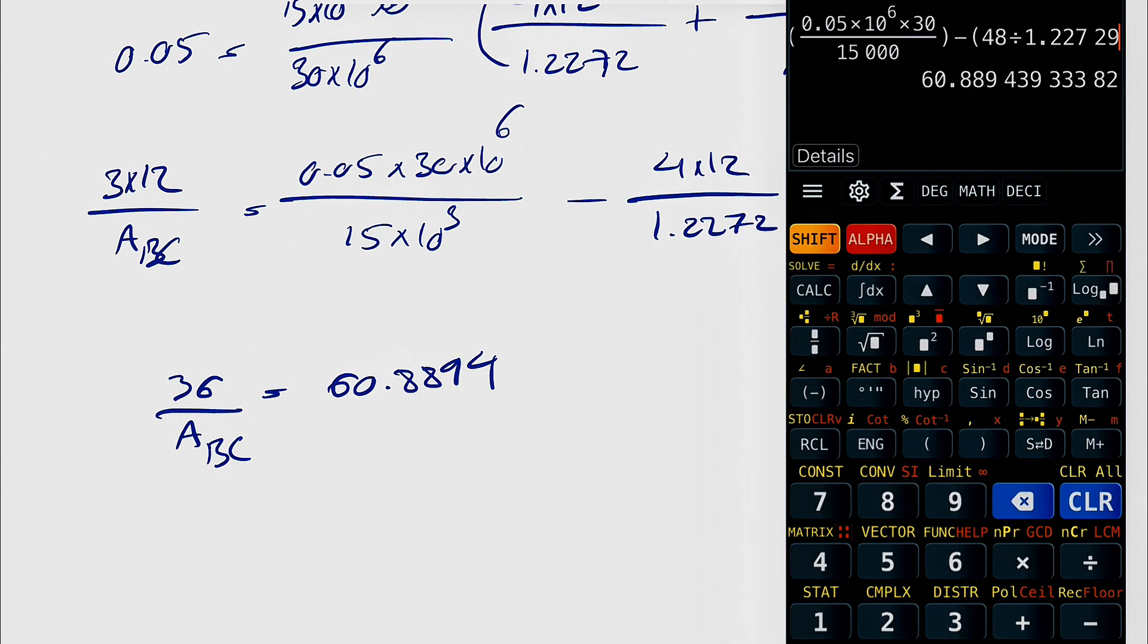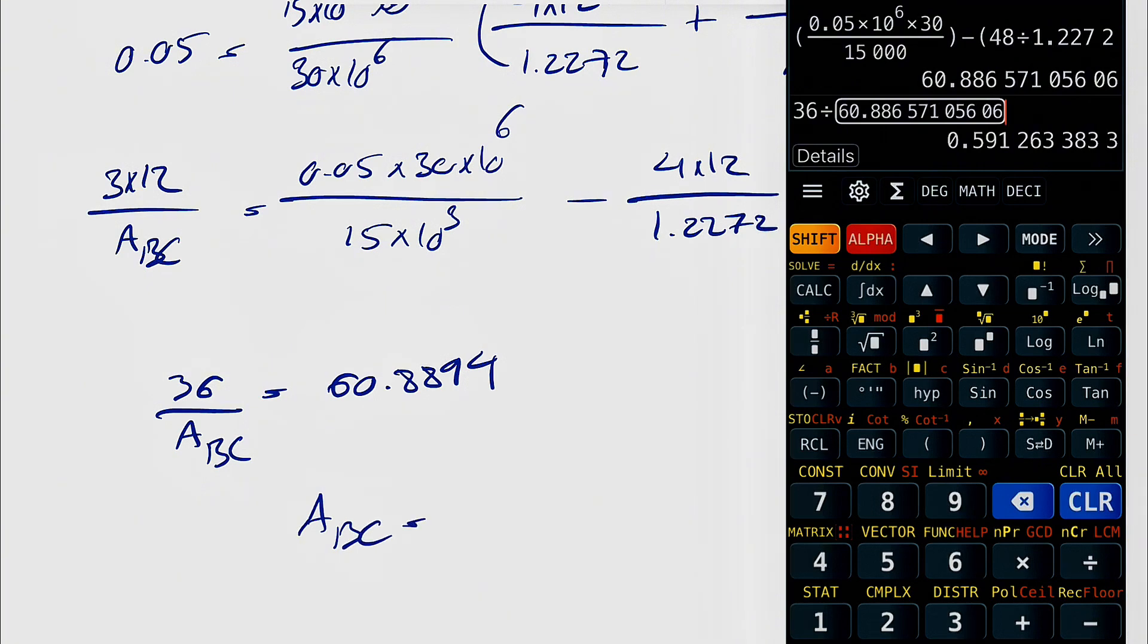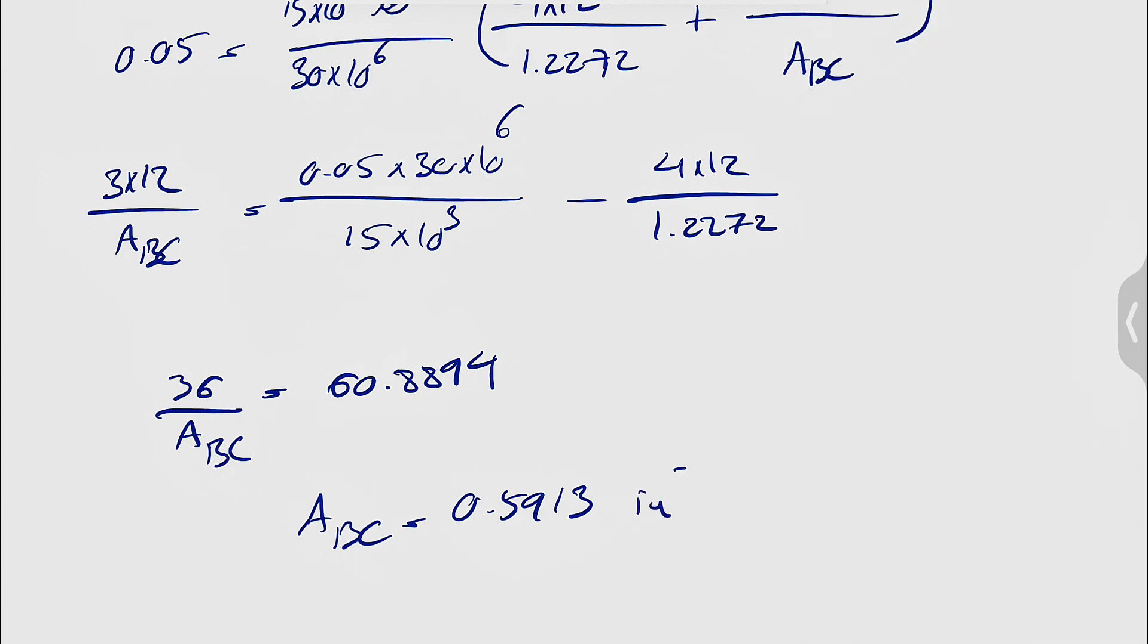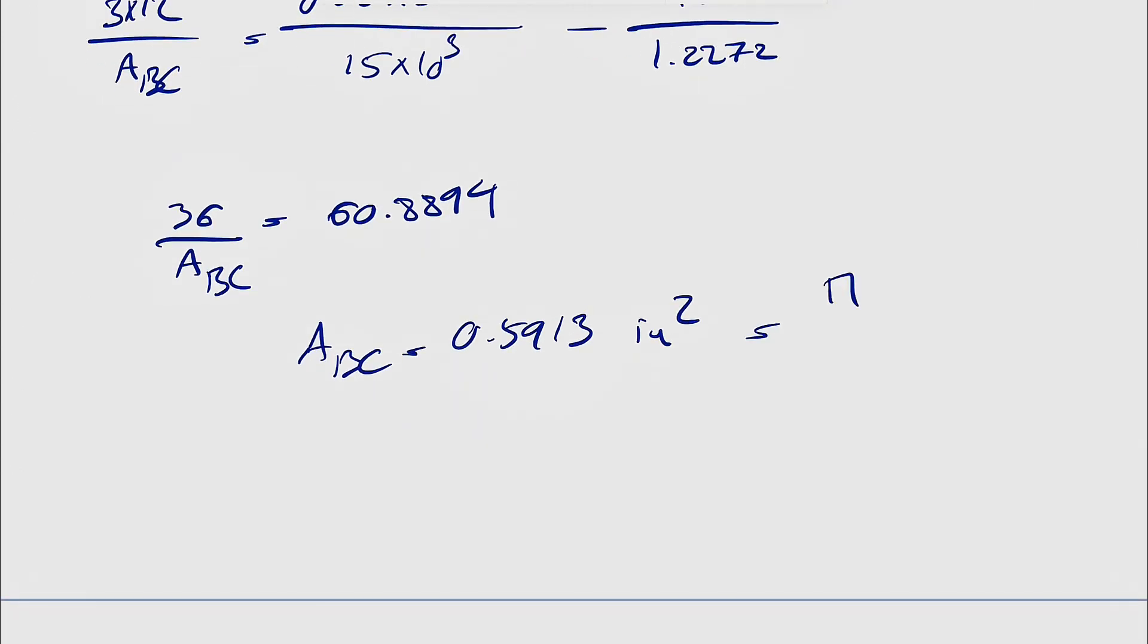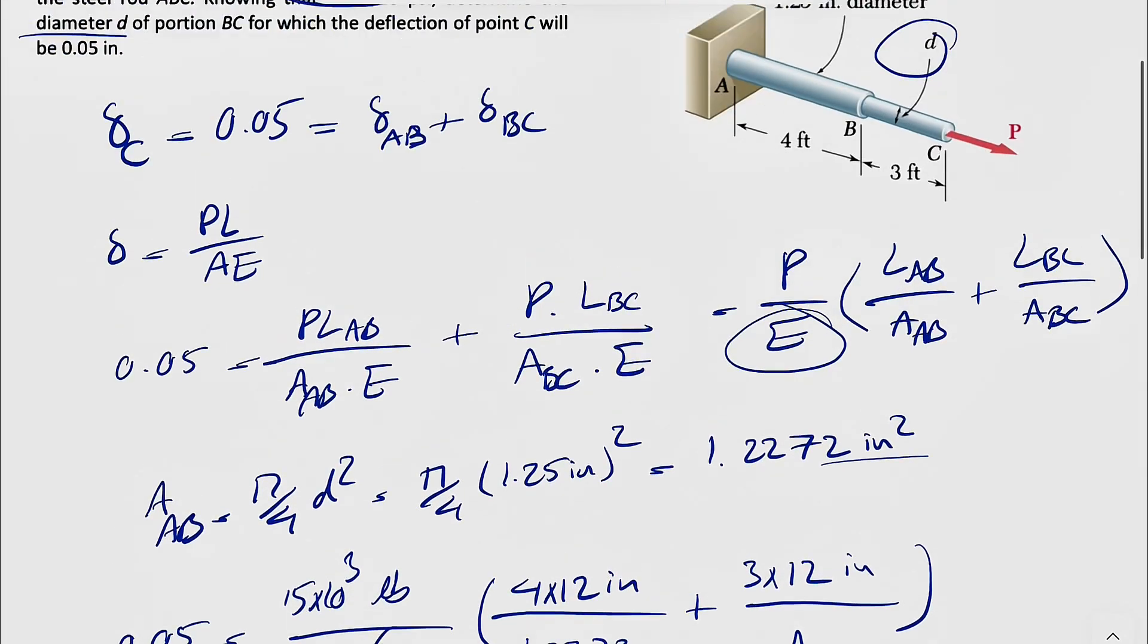And we just have to divide 36 by our answer, so ABC is going to be 0.5913 inches squared, and we know this will be equal to pi over 4, d squared.